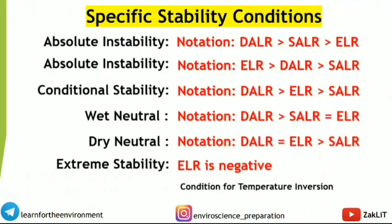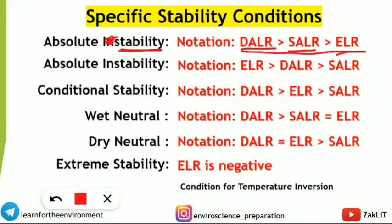The first star concept is atmospheric stability conditions — specifically atmospheric stability conditions. First, note down absolute stability. In absolute stability, the dry adiabatic lapse rate (DALR) is the highest, followed by the saturated adiabatic lapse rate (SALR), and least is the environmental lapse rate (ELR). So the order DALR > SALR > ELR is the condition for absolute stability.